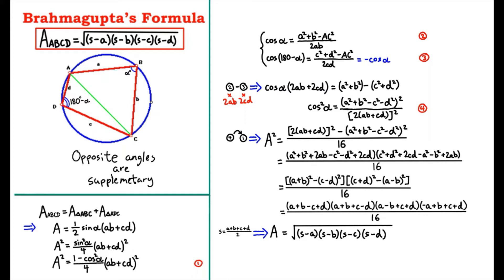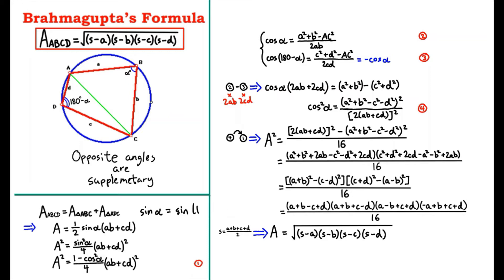We know how to find the area of a triangle. The area of triangle ABC is equal to one-half times sine(alpha) times AB. The area of the other triangle is one-half times sine(180 minus alpha) times CD. Since sine(alpha) equals sine(180 minus alpha), the sum of these two areas simplifies accordingly.